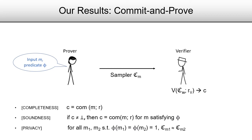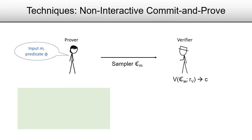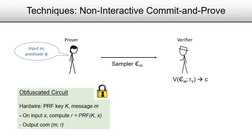Let me tell you a little bit about the techniques that go into constructing a non-interactive commit-and-prove argument — NIDI will be an abstraction of these techniques into a clean primitive. The prover sends the verifier a sampler that encodes the prover's secret message M and outputs non-interactive commitments to the message when the verifier interacts with it. The sampler takes the form of a circuit, which has hardwired a key K for an appropriate pseudorandom function and also has hardwired the prover's secret message M. On input X, this circuit computes a PRF and outputs a commitment to the message.